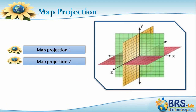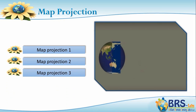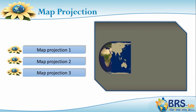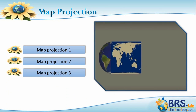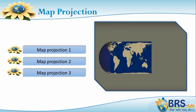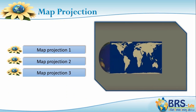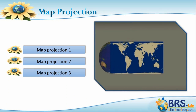In Map Projection 2, we will discuss three different coordinate systems. In Map Projection 3, we will discuss the meaning of projection, its types, and effects.